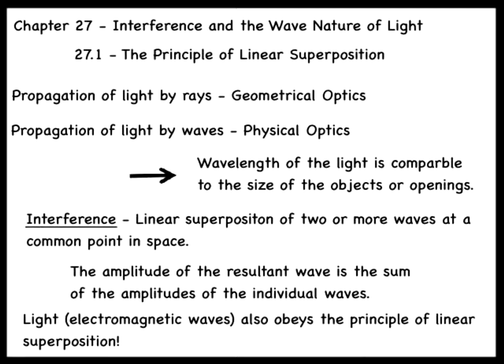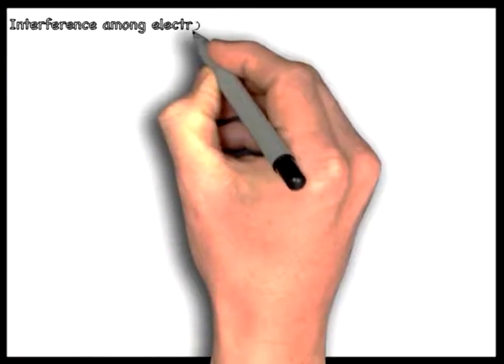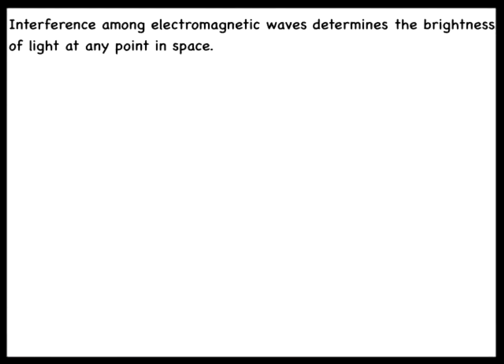When two or more light waves pass through a given point, their electric fields combine according to the principle of superposition and produce a resultant electric field. Recall that the square of the electric field strength is proportional to the intensity of the light, which in turn is related to its brightness. Thus, interference can and does alter the brightness of light, just as it affects the loudness of sound.